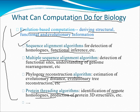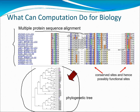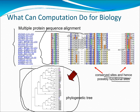Protein threading algorithms are used for identifying remote homologs and predicting 3D protein structures, including primary, secondary, and tertiary structures. Computation also enables multiple protein sequence alignment, which is a relatively straightforward task for several programs and databases. For example, a phylogeny tree can be generated through software by inputting sequences — you press enter and get all sequences arranged in the form of a tree. These trees contain conserved sites that are possibly functional sites.